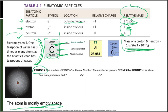Protons define the identity of an atom. Pause and try to find how many protons are in bromine, magnesium, and cesium. Bromine is on the far right in the fourth row — number 35 — it has 35 protons. Magnesium is on the left in the third row, second column — it has 12 protons. And cesium, way down in the sixth row, first column, has 55 protons.